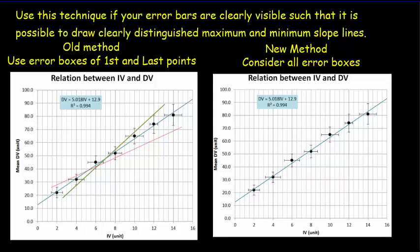If the maximum and minimum slope lines are very close to each other, if you have small uncertainties, then you're going to use the Lines T test in Excel.